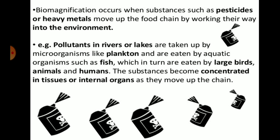Biomagnification occurs when substances such as pesticides or heavy metals move up the food chain by working their way into the environment. We use pesticides in agriculture for many purposes — insecticides, molluscicides, herbicides, and others. These pesticides also contain heavy metals. Heavy metals are also released from industrial areas. For example, pesticide runoff mixes with water and gets concentrated in aquatic ecosystems such as rivers and lakes.